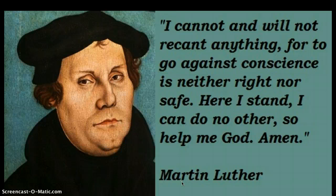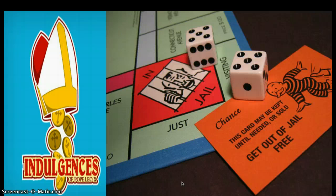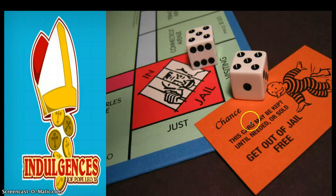Martin Luther is the man credited with starting the Protestant Reformation and is the creator of the Lutheran Church. He was a Catholic monk who broke with the Catholic Church, fighting against some ideas — primarily the sale of indulgences. Indulgences were like a 'get into heaven for a fee': the Catholic Church sold these, claiming they could guarantee your relatives entry into heaven.